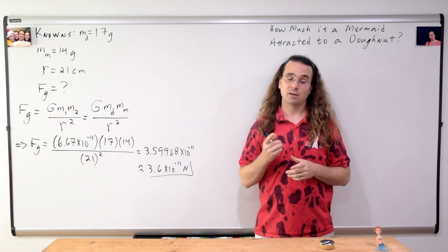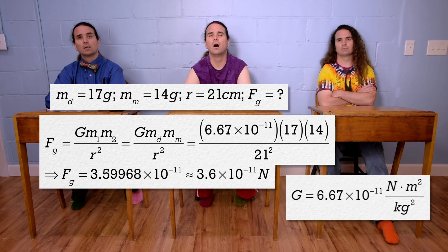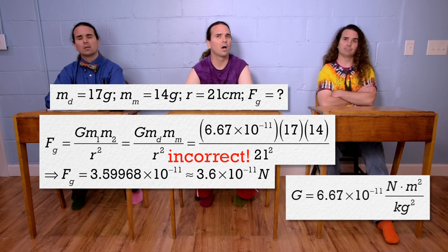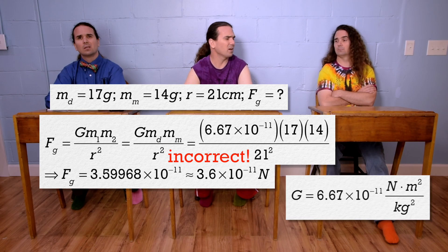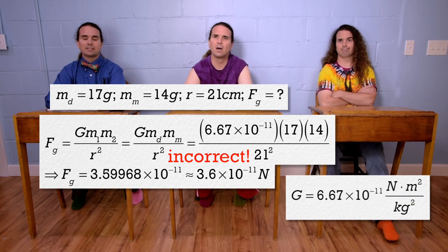Unfortunately, this is not correct. We forgot to convert to kilograms and meters. How do you know we need to do that? The units on big G. They are newtons times meters squared over kilograms squared. The values we plug into the equation need to have units that match those units. That makes sense.